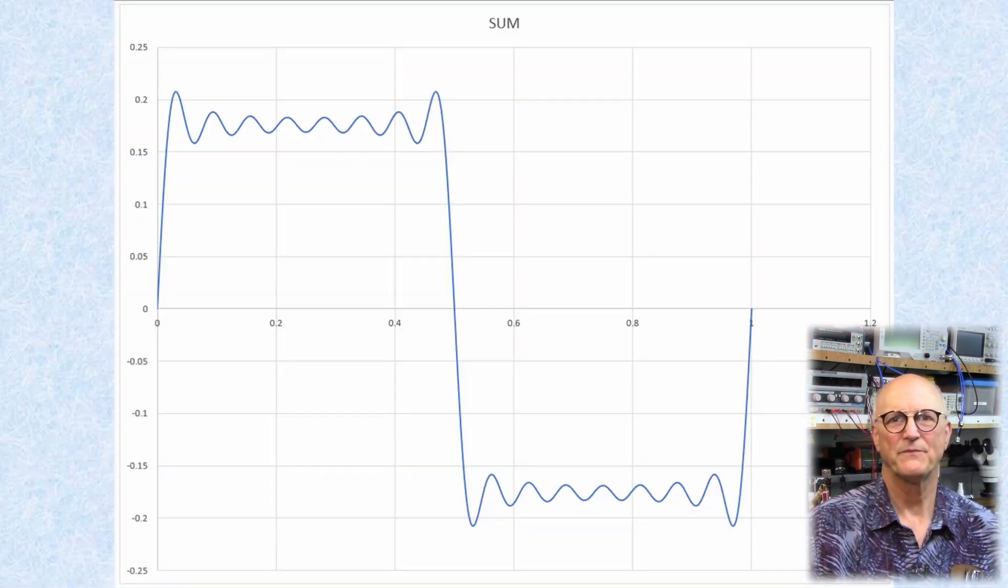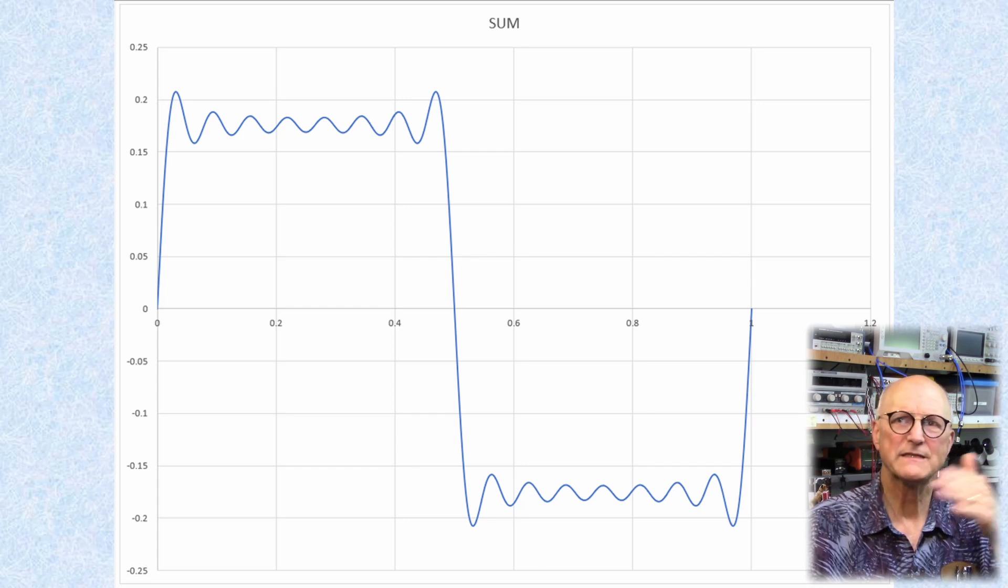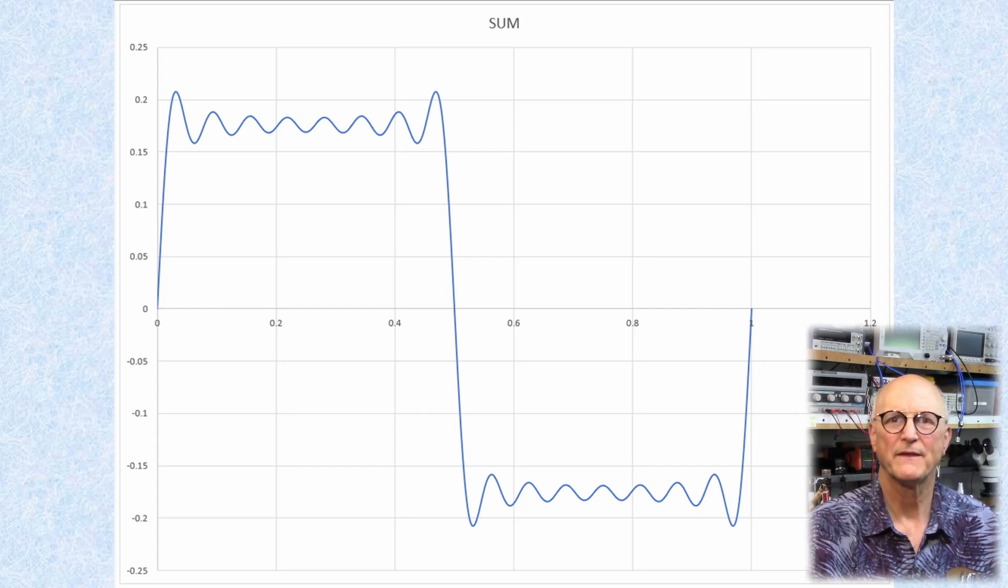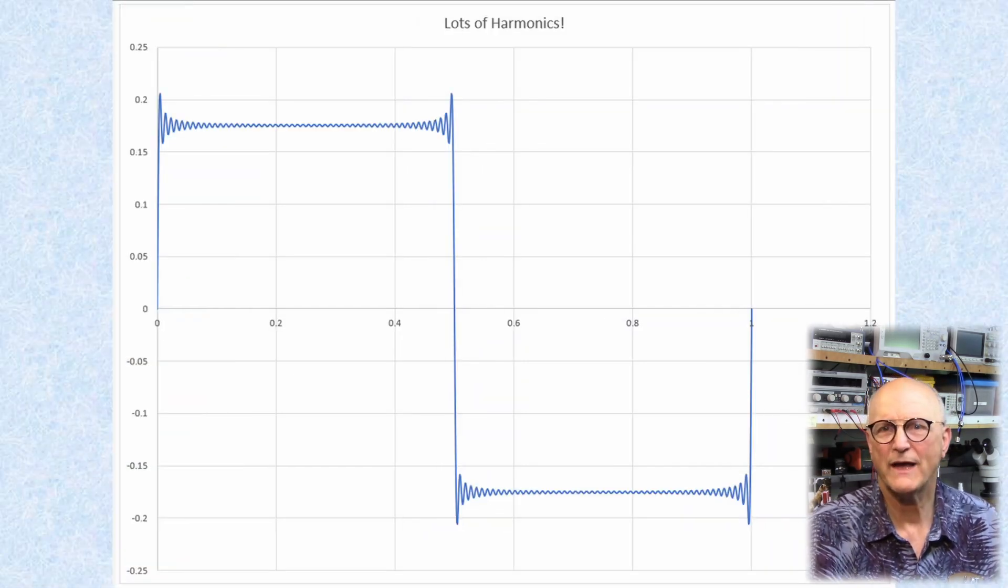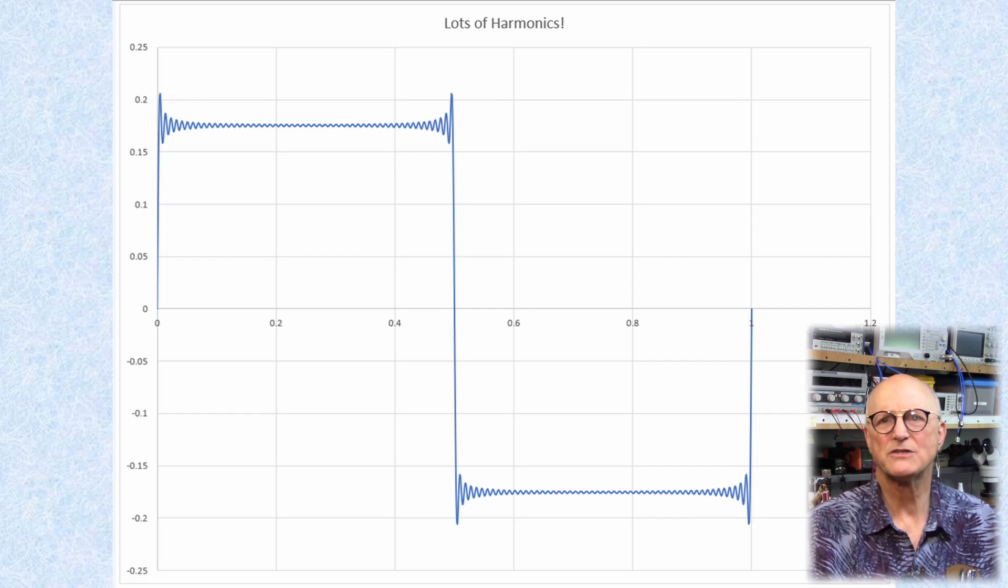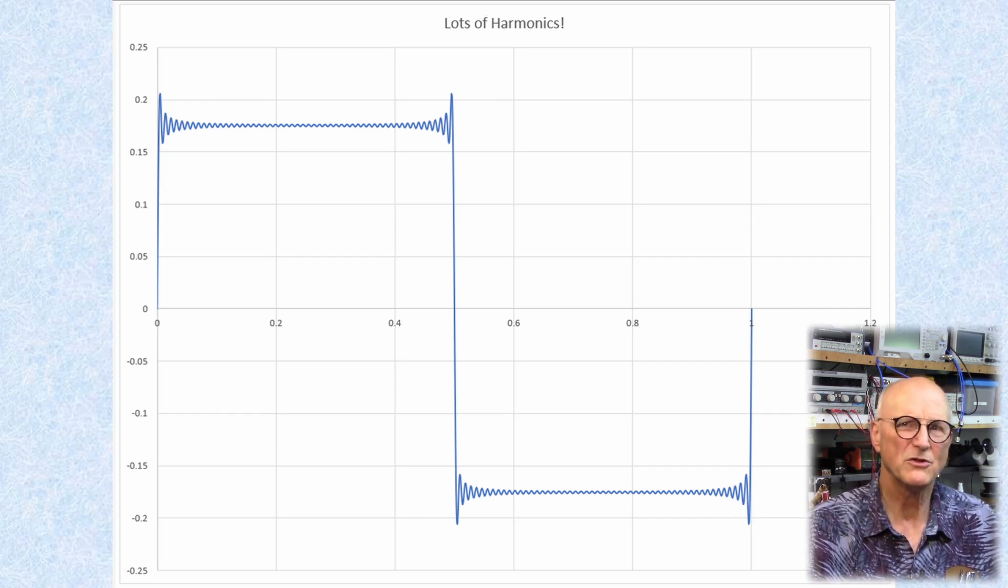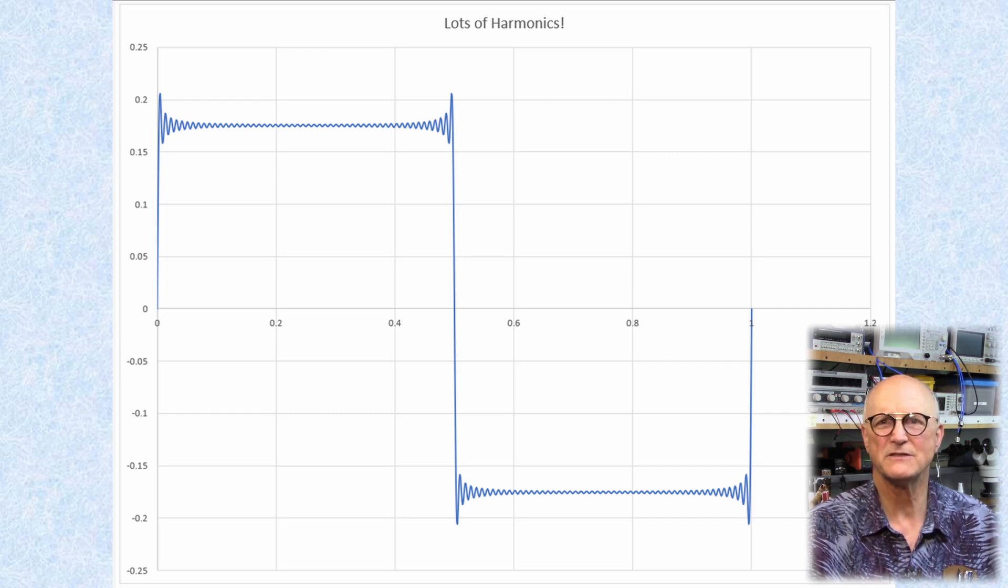Okay, so back to our example. When we add all of these sine wave signals together, we get something that looks like this in the time domain. The more harmonics we add to the series, the more like a square wave it looks. If we were to simply look at a signal on our oscilloscope, we would never know what actually makes up this odd-looking waveform.